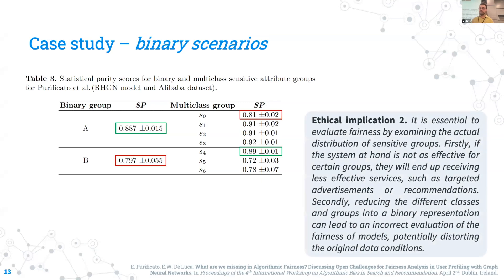These results lead us to the second ethical implication. It is essential to consider a multi-class fairness analysis in algorithmic fairness for two reasons. First, if the system is not as effective for certain groups, they will end up receiving less effective services. Second, if we reduce different classes and groups into a binary representation, these practices can lead to an incorrect evaluation of the fairness of models and potentially distort the original data conditions.